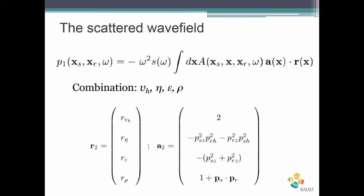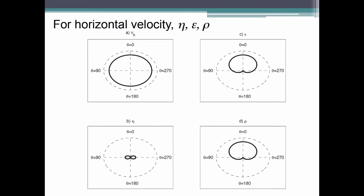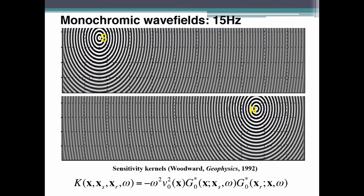This reduces the parameter combination to three. We did a similar exercise for another combination and found something even more interesting: the horizontal velocity is solely defined by diving waves with no trade-off with other parameters. Epsilon and density have similar radiation patterns - you can use one, not both, otherwise you cannot distinguish them in inversion. We looked at many combinations and found that the vh, eta, epsilon combination is optimal, where epsilon acts as the garbage collector to fit amplitudes and only vh and eta affect the kinematics.